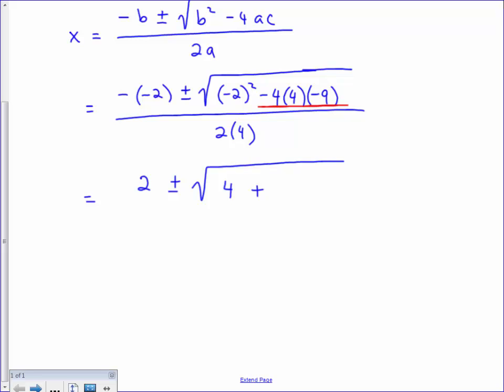And then I'm going to multiply on my calculator. 4 times 4, times 9. 4 times 4, times 9, is 144. And then all this is over 2 times 4, which is 8. Simplify now the numbers underneath the root. So 4 plus 144 is 148. And then all over 8.